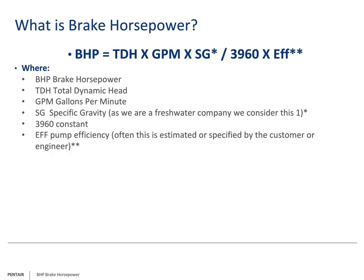What is brake horsepower? Simply put, it is the horsepower needed at the system requirements. To calculate the horsepower needed, you need to know the system total dynamic head, or TDH, the gallons per minute of the system, and the specific gravity of the product being pumped. In our industry we essentially ignore this, as we are pumping water with a specific gravity of one.